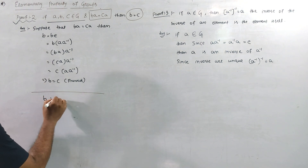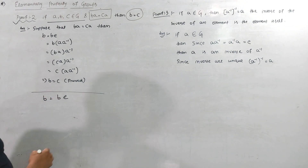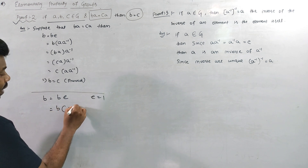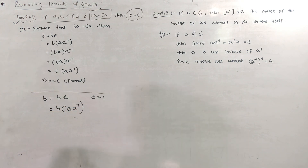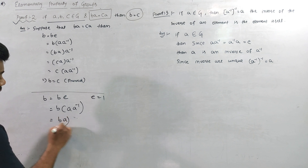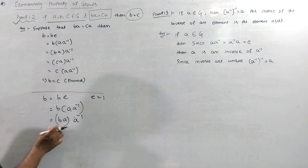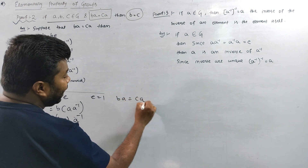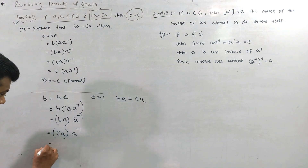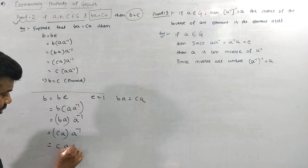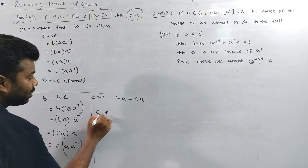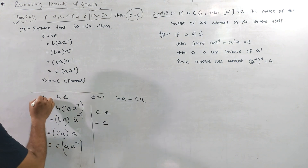B is equal to B · E. What is B · E? E is equal to A · A inverse. Since B·A = C·A, we multiply on the right by A inverse. So B·A · A inverse = C·A · A inverse. That gives B · (A · A inverse) = C · (A · A inverse), which is B · E = C · E. Therefore B = C — the right cancellation law is proved.